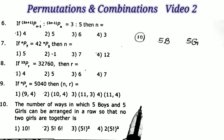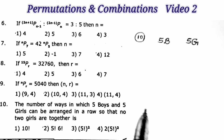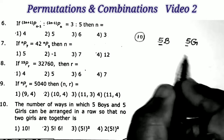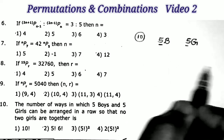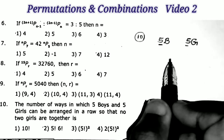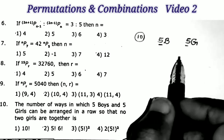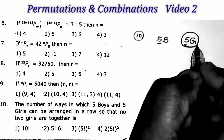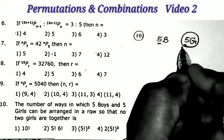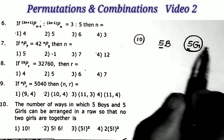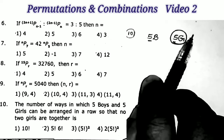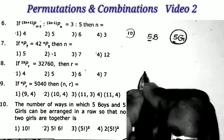Let us start the class. Sum number 10: the number of ways in which five boys and five girls can be arranged in a row so that no two girls are together. The condition is no two girls together. Always remember: when we have the condition no two girls together, we leave the girls first — just leave the girls and arrange the boys only.